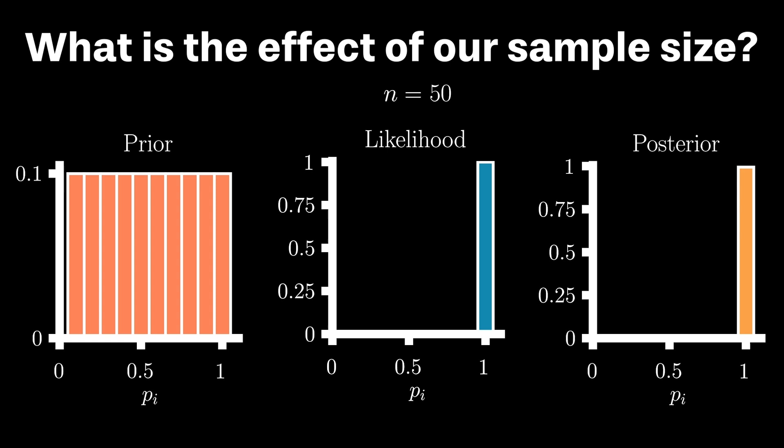Unsurprisingly, the more consecutive sunny days we observe, the stronger our belief that the correct value for p is 1. This should make sense, as it is pretty unlikely to observe, say, 50 consecutive sunny days for any value of p that is not 1.